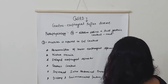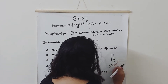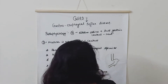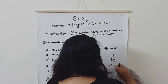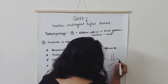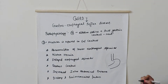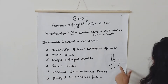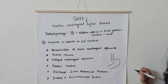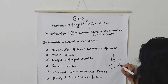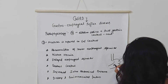Now, let me explain further. This is the oesophagus and this is the stomach. When you have eaten a lot of food and your stomach is filled, the stomach releases a lot of acid.